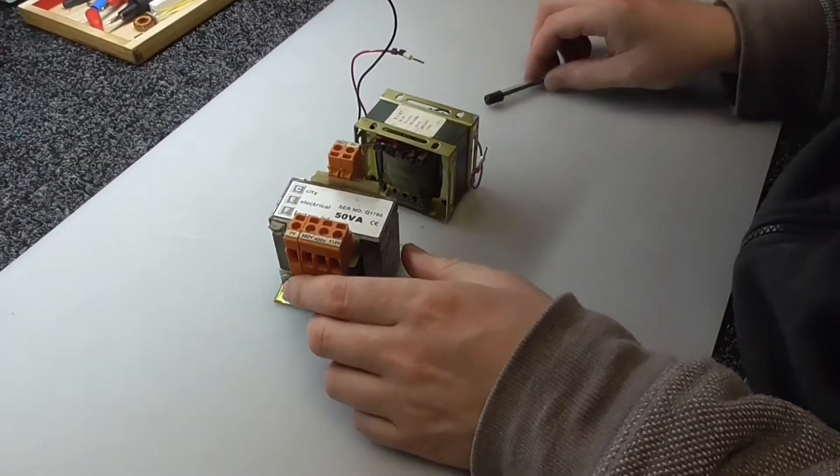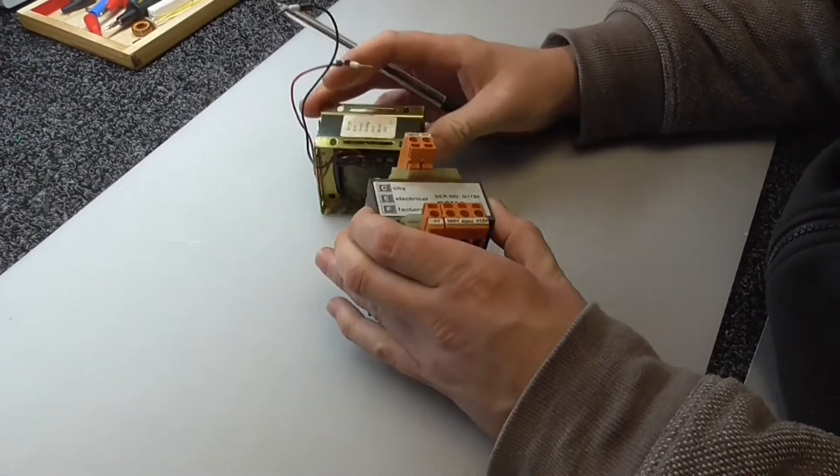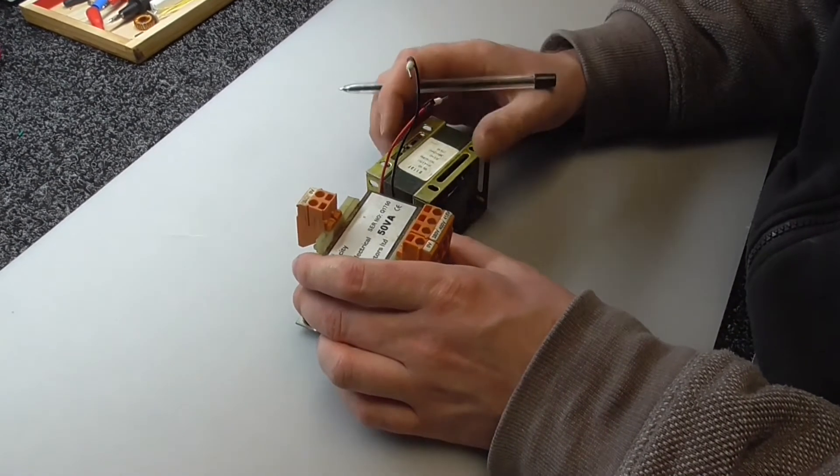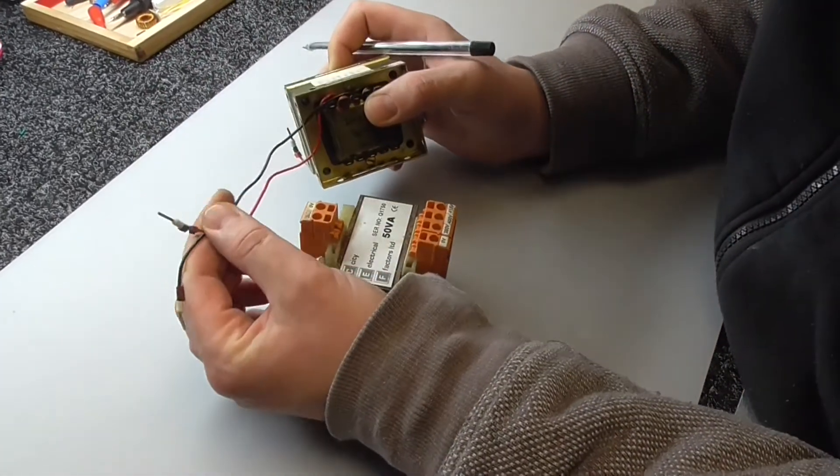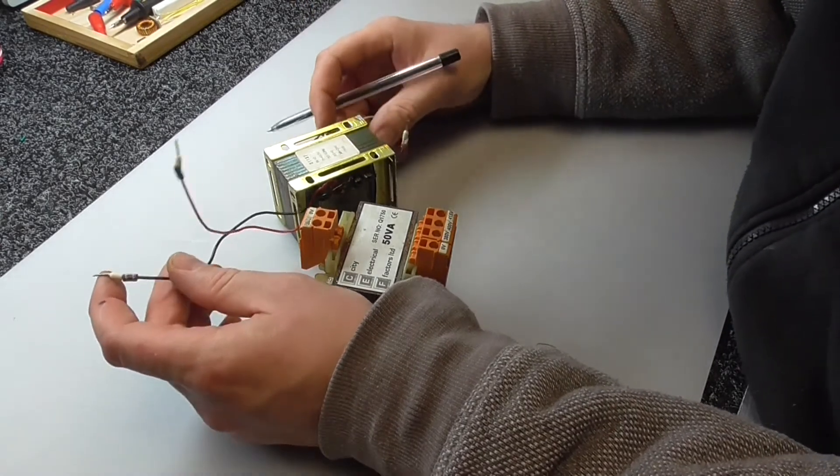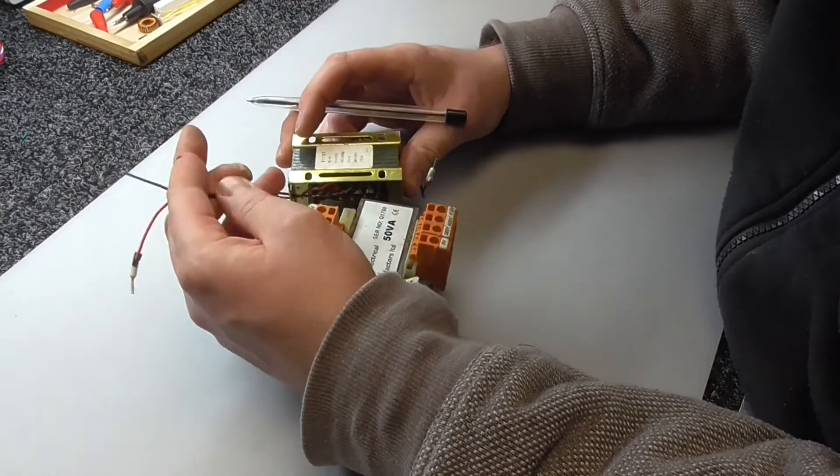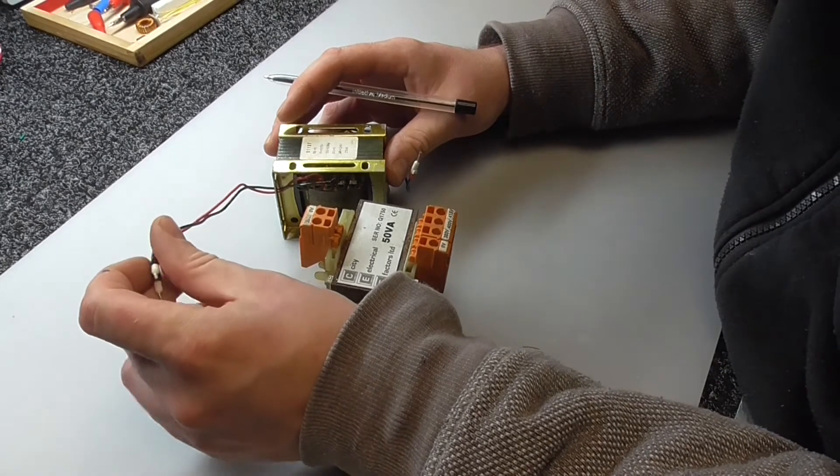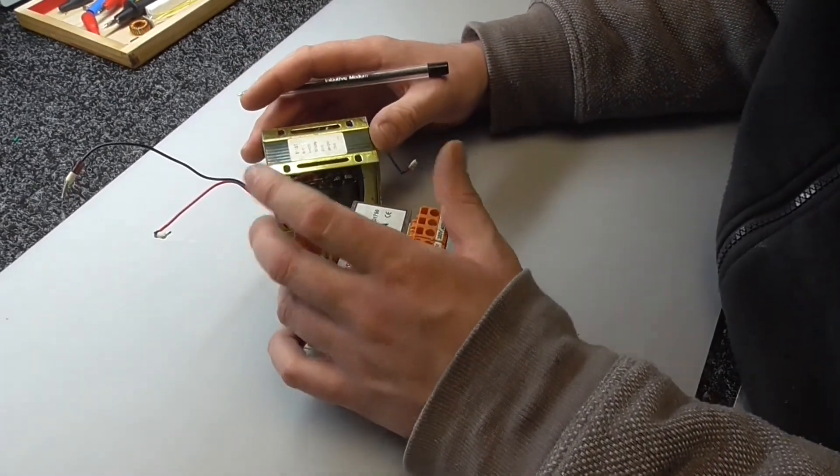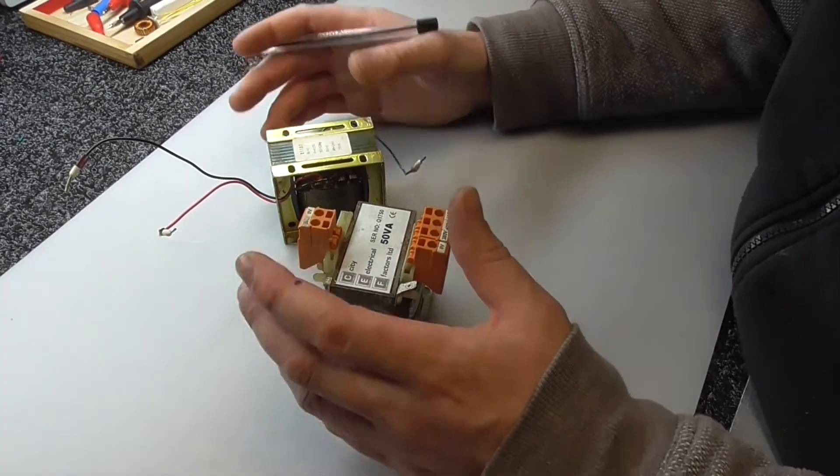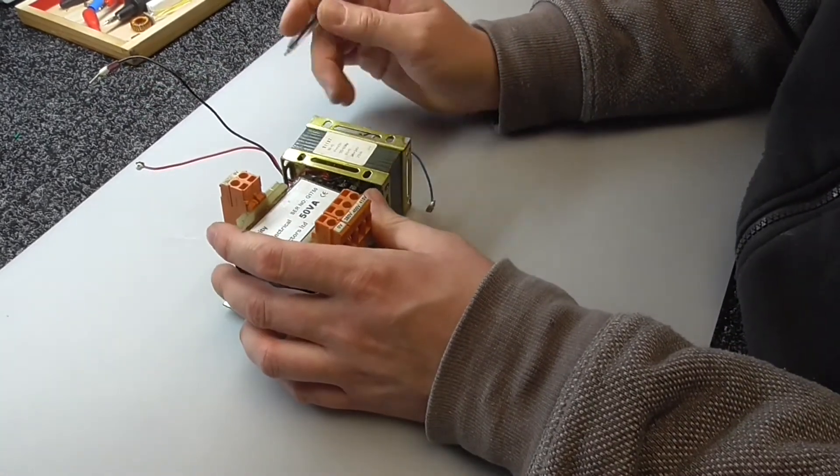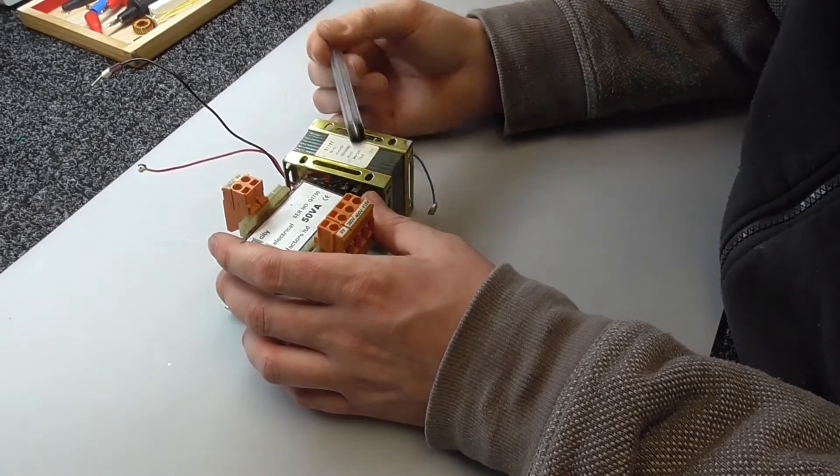We can use any transformers. Of course we can buy on the market the proper isolating transformers, so the ratio is one to one, and usually you have on the wires some marks for input and output. There will be a few turns different on the windings just to compensate the losses. But if someone doesn't have a proper transformer, because transformers are quite expensive and the best ones are toroidal transformers, you can build the isolating transformer from two identical transformers.